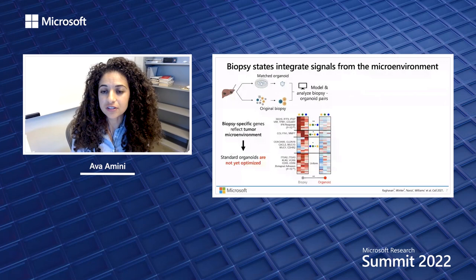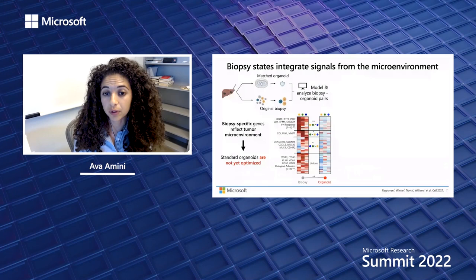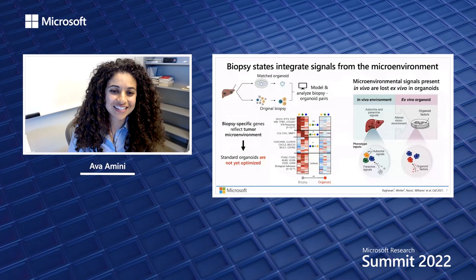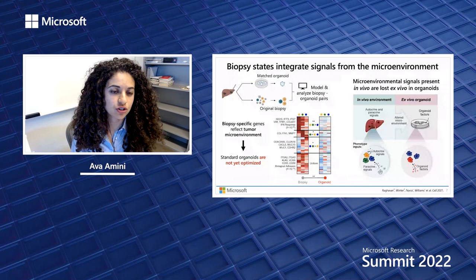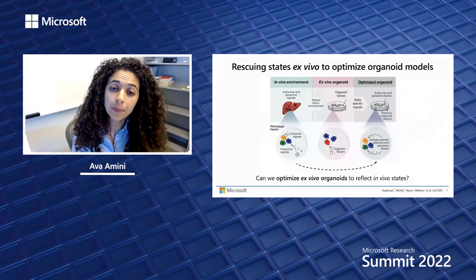We find that there are significant differences in the expression of particular genes related to the tumor's local microenvironment, showing that these tumor organoids are not yet optimized in their ability to model tumor states, and that the signals present within the body can be lost in these ex vivo lab culture models.